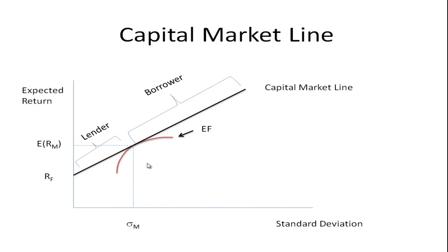There are portfolios inside here, under this curve, but they're not as good. Because we could pick a portfolio here, but at the same level of risk we could move up to the efficient frontier and find a portfolio that has a higher expected return for that given level of risk.